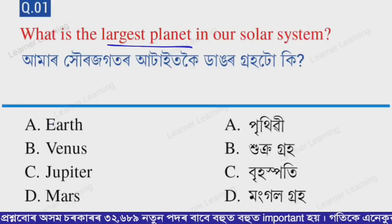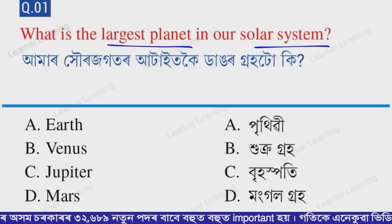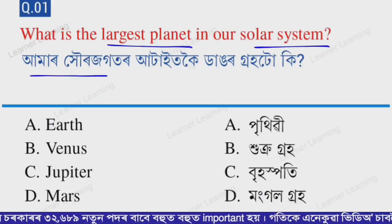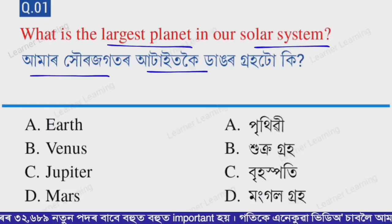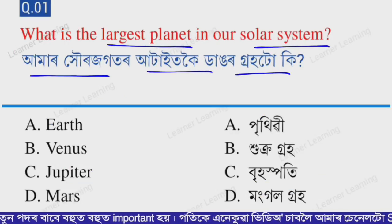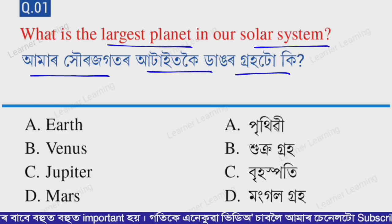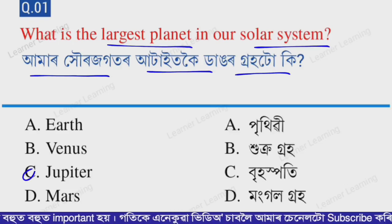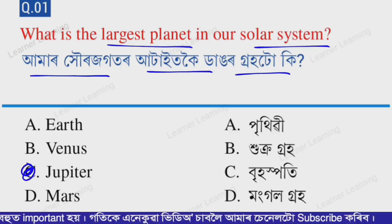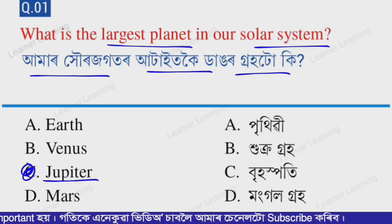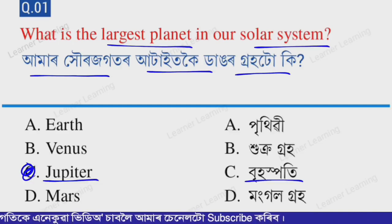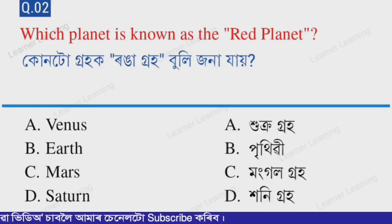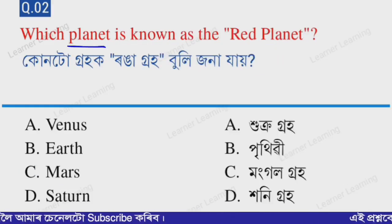The first question: What is the largest planet in our solar system? Select from the options. Option C — Jupiter. Jupiter is the largest planet in our solar system.